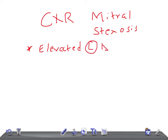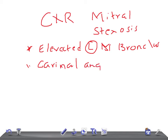Next is carinal angle widening. The normal carinal angle is 60 to 75 degrees, and in mitral stenosis you will see carinal angle widening beyond this range.